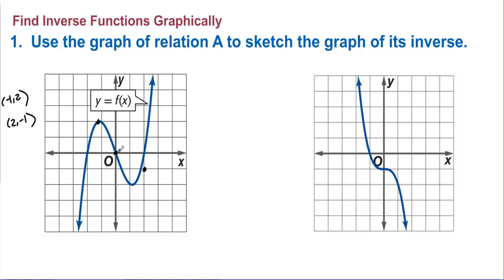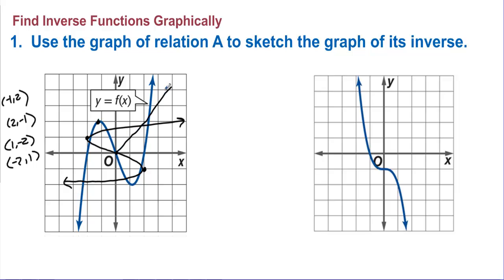We also have (0, 0) and the point (1, negative 2) on the original function, so we should have (negative 2, 1) on the inverse. Since the original goes down to negative infinity, the inverse goes upward through those points and reflects over the line y equals x.